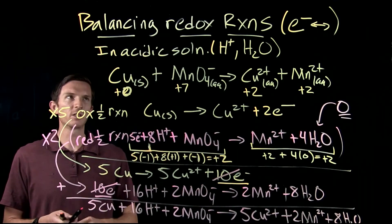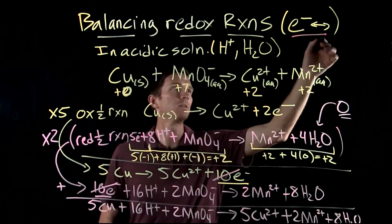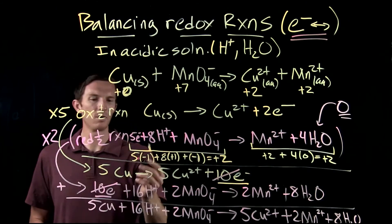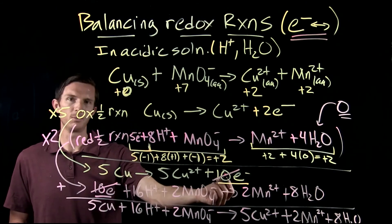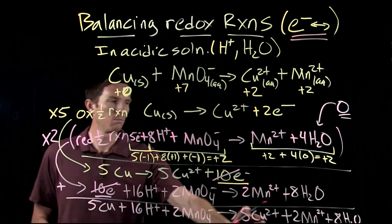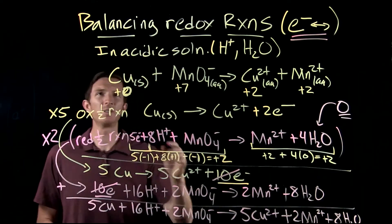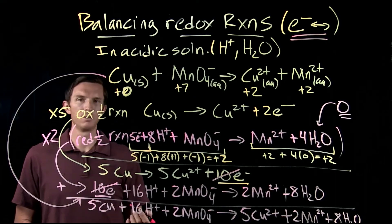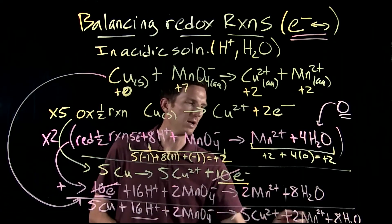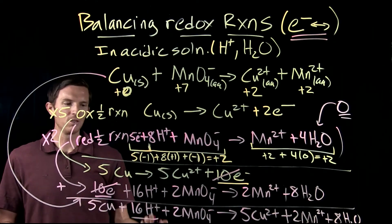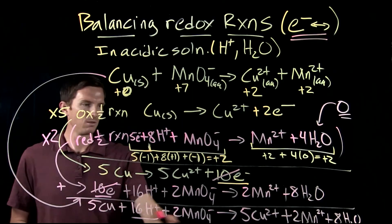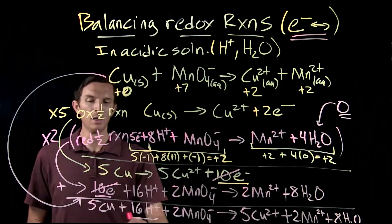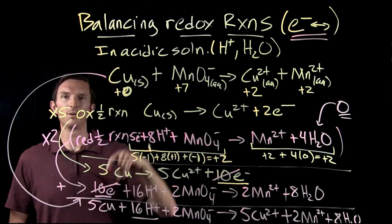To balance redox reactions we must take into consideration the electrons being transferred, ensuring the correct number are produced and consumed. The lowest common multiple here was ten, which gave us our overall balanced equation. Going from our skeleton equation to the balanced equation, we added hydrogen ions and water molecules, and we noticed coefficients like five for copper that account for the transfer of electrons.